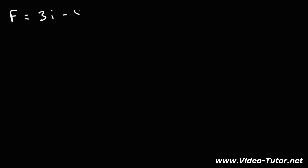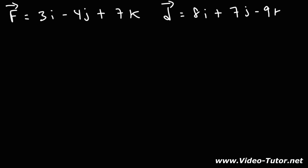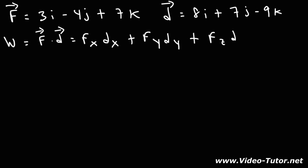Now let's work on one more problem. If you're given the force and displacement vectors in component form — say the force is 3i minus 4j plus 7k and the displacement is 8i plus 7j minus 9k — calculate the work done. If the vectors are given in component form, just use the dot product formula: W = fx·dx + fy·dy + fz·dz.